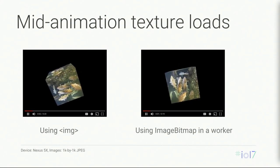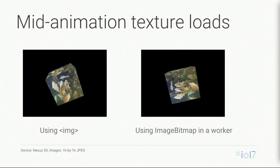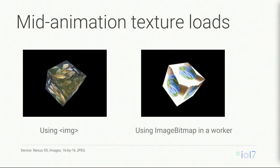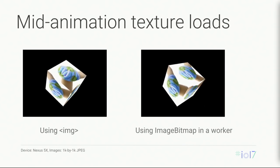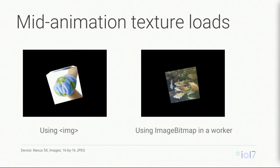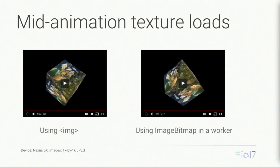Here are some demo videos that speak for themselves. On the left, there's a pause when the image changes — that's the decode causing the jank. The right one is smoother. These were captured on a Nexus 5X device — a phone from last year — using one megapixel (1K by 1K) images. Let's look at the DevTools timeline to see what was going on.